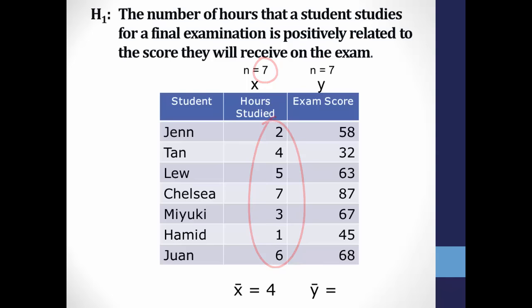Do the same thing for exam scores, the y variable, and you'll come up with 60 as the mean. So the mean of x is 4 and the mean of y is 60. Now we have all we need to start doing our calculations.